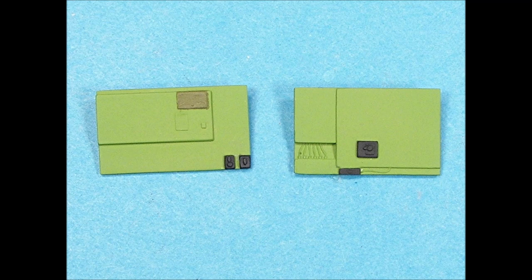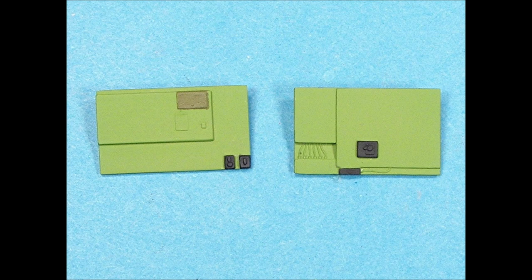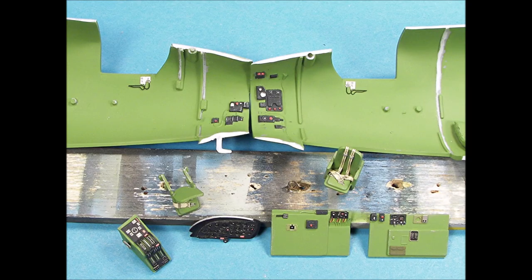The next step was to mask and paint the cockpit sidewall panel details and then add the Eduard pre-painted placards. All the interior parts have been painted and detailed. I picked out all the tiny details with paint by dipping the end of a sharp toothpick into the paint bottle cap to apply tiny amounts at a time.